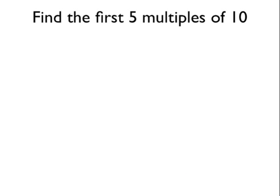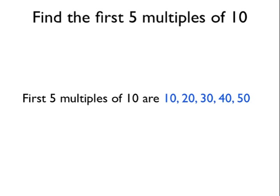Now, we've been asked to find the first five multiples of ten, so we just think of all the numbers in the ten times table. So the first five multiples of ten are ten, twenty, thirty, forty and fifty.